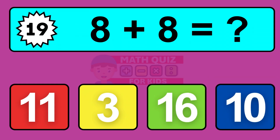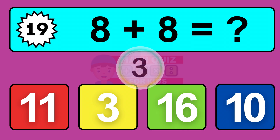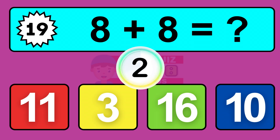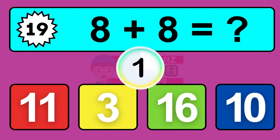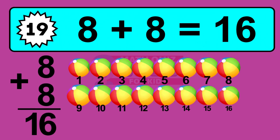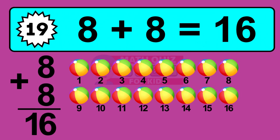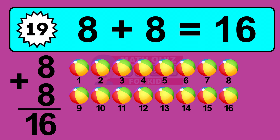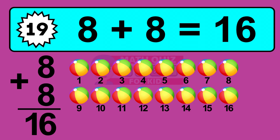Question 19. 8 plus 8 equals what? The answer is 8 plus 8 is 16. Let's count it: 1, 2, 3, 4, 5, 6, 7, 8, 9, 10, 11, 12, 13, 14, 15, 16.